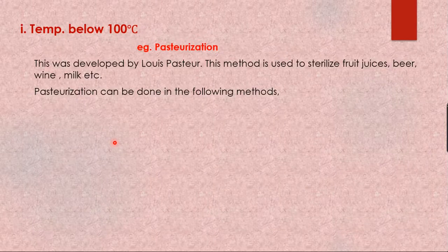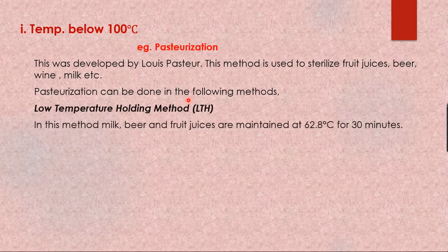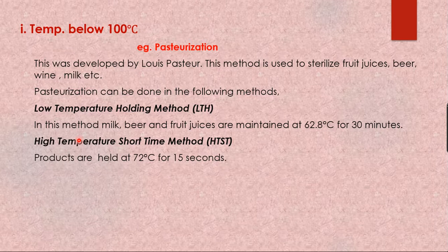Pasteurization at temperature below 100°C was developed by Louis Pasteur, and it is used to sterilize food, juices, beer, wine, milk, etc. Pasteurization methods include: the Low Temperature Holding method — 62.8°C for 30 minutes, which is also applicable for milk at home; and the High Temperature Short Time method — products held at 72°C for only 15 seconds.